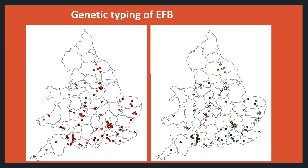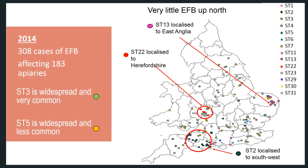Looking at the cases of EFB in England and Wales for 2014, strain type 3 (light green dots) is common throughout England and Wales and doesn't cluster in any specific region. Strain type 5 (orange dots) is found throughout England and Wales but is less common than type 3. Strain type 22 (red dots) is rare but very localised to the Herefordshire region. Strain type 13 (pink dots) is very localised to East Anglia, and strain type 2 (dark green) is fairly localised to the south-west of England. There is also noticeably less EFB in the north of England than in the south.